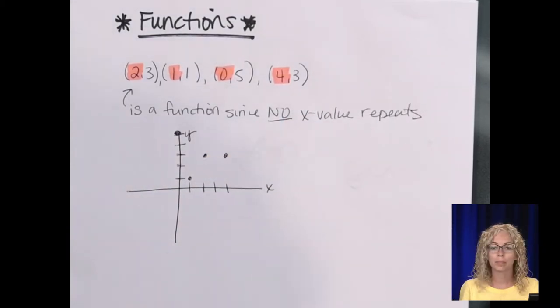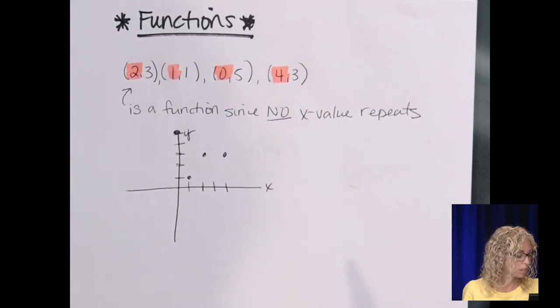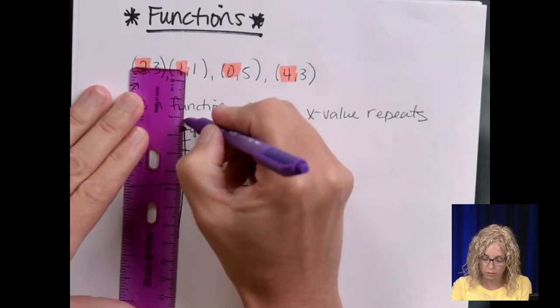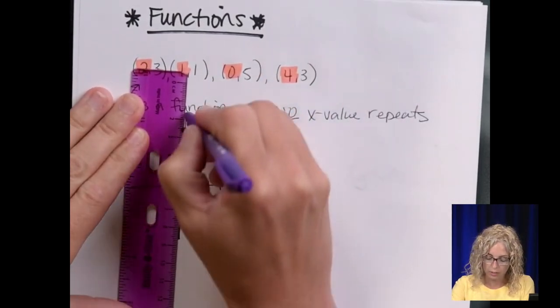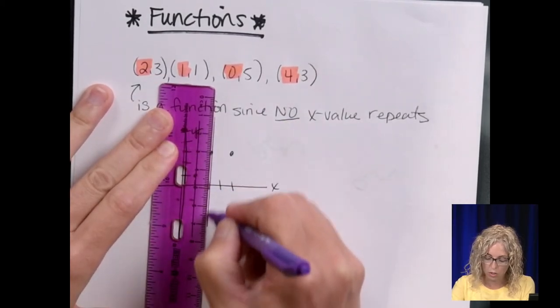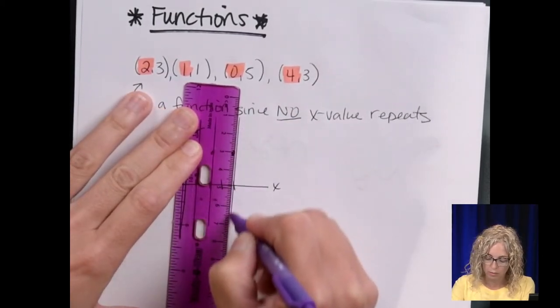This set of points is a function because the graph, which is a collection of points, passes the vertical line test. If I were to grab my ruler, I could draw a vertical line through all of these points, and it would only touch one point.